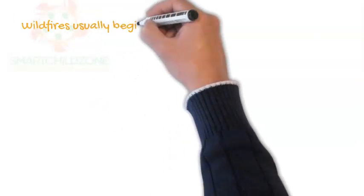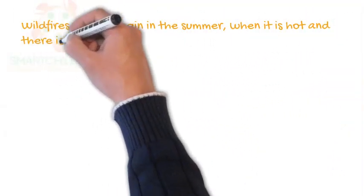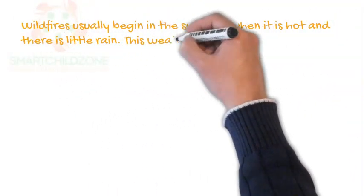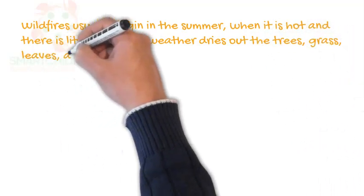Wildfires usually begin in the summer when it is hot and there is little rain. This weather dries out the trees, grass, leaves, and branches.